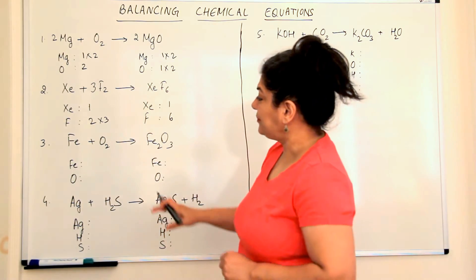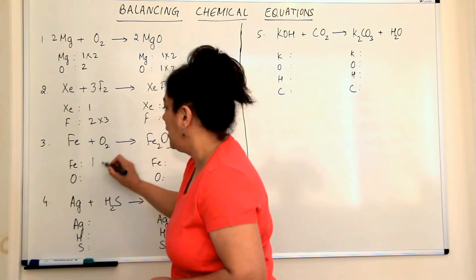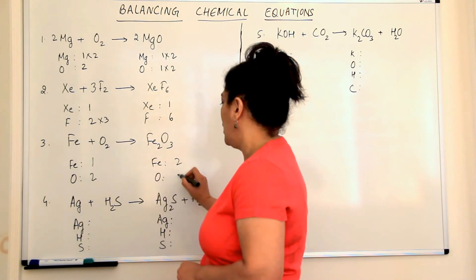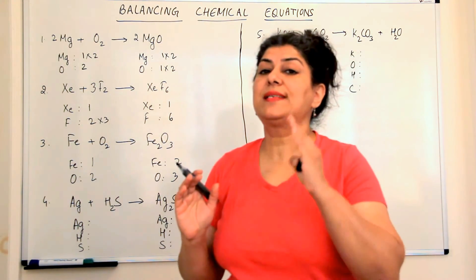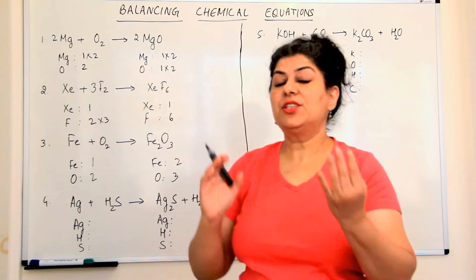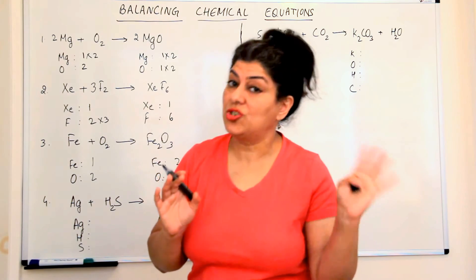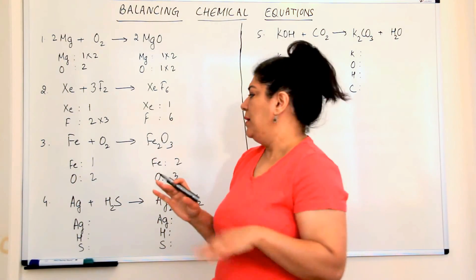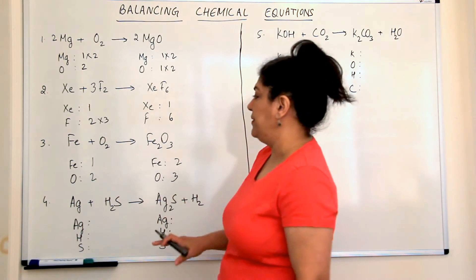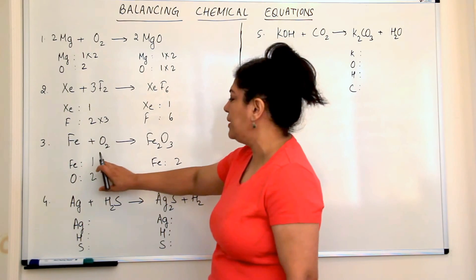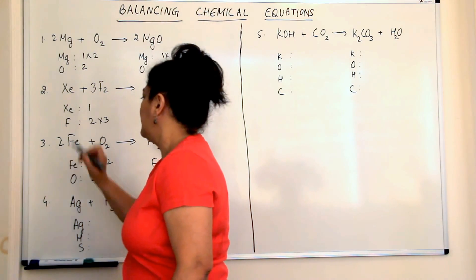Moving to the third example: iron combines with oxygen to give us iron oxide. How many irons are there in the reactants? One. How many oxygens? Two. In the products: two irons and three oxygens. Remember, whenever you have oxygen and another element, give preference to the other element if it is unbalanced, and then move to oxygen last, since oxygen and hydrogen tend to appear in multiple reactants and products. Iron is one on the left and two on the right, so we multiply the reactant side by two to get two irons — iron is now balanced.